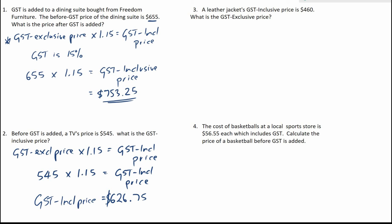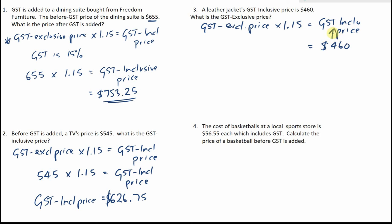These next two questions we're going to be working backwards, whereby we're given the GST inclusive price and we have to find out what the price is before GST is added. We're still going to use our formula: GST exclusive price times 1.15 gives us the GST inclusive price. We know that a leather jacket's GST inclusive price is $460.00, so we're going to place $460.00 directly underneath the inclusive price.